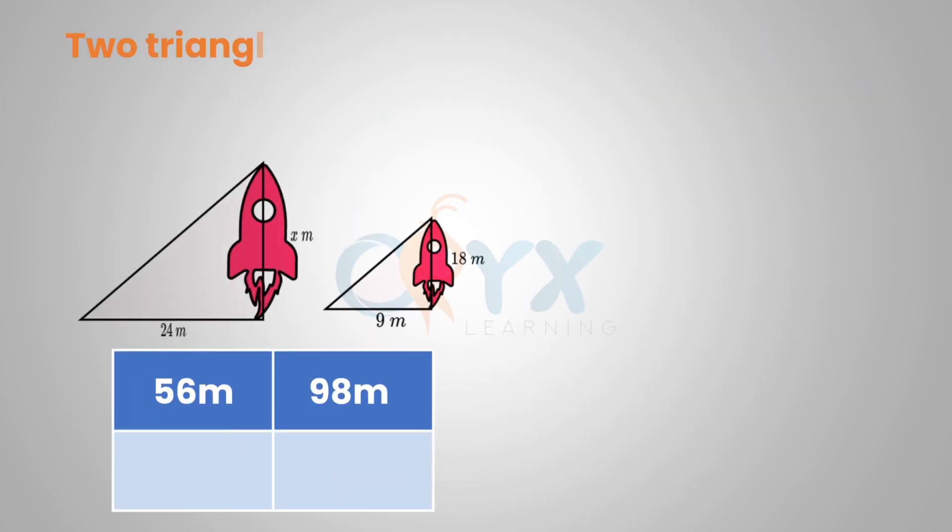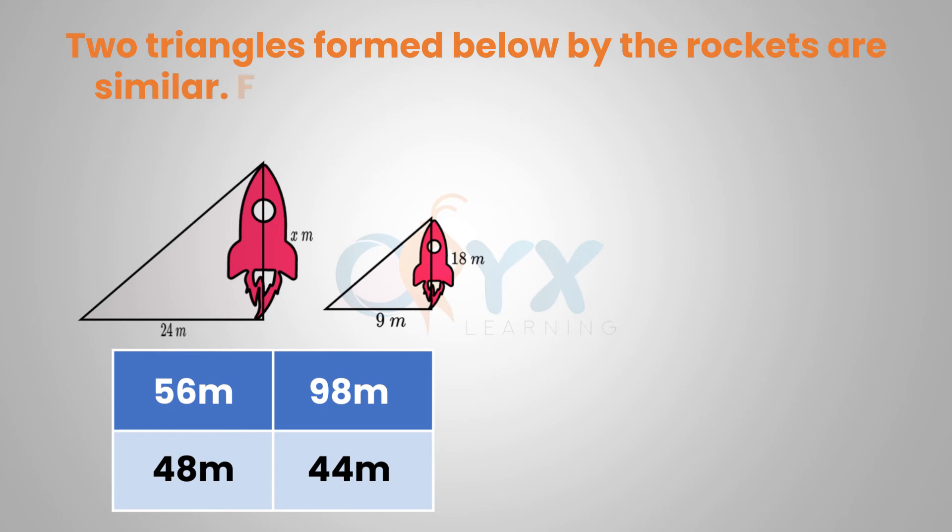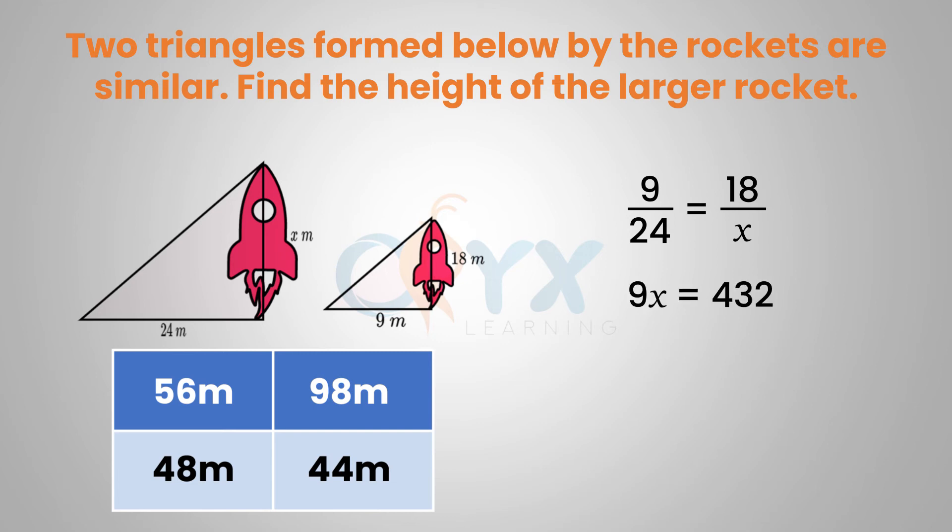Two triangles formed below by the rockets are similar. Find the height of the larger rocket. So if we set up a proportion with the rockets, 9 over 24 should equal 18 over x. Cross multiplying, we get 9x equals 24 times 18, or 9x equals 432. Dividing both sides of the equation by 9, x equals 48 meters. So the height of the larger rocket is 48 meters.